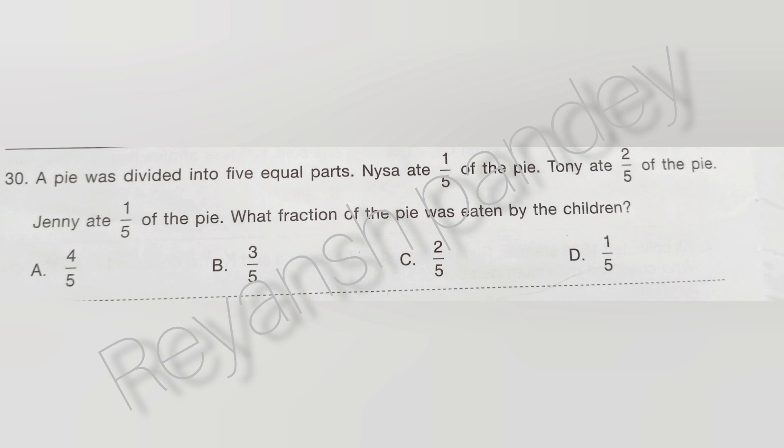A pie was divided into 5 equal parts. Naisa ate 1/5 of the pie. Tony ate 2/5 of the pie. Jenny ate 1/5 of the pie. What fraction of the pie was eaten by the children? The answer is A — 4 by 5.